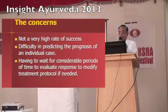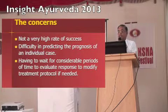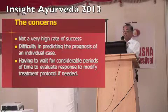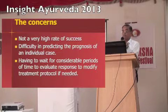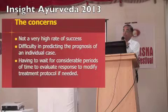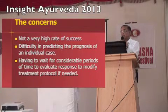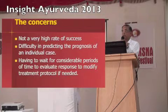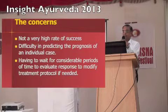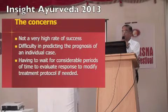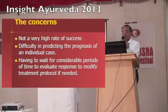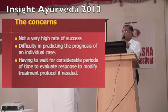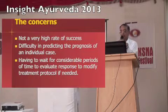This approach has a particular problem in that there is difficulty in predicting the prognosis of an individual case. We also have to wait a considerable period of time to evaluate the response in order to modify the treatment protocol. For menstrual irregularity, we wait several cycles before deciding the direction. For infertility, we tend to wait seven to eight months, and if nothing happens, we have to redesign our strategy — which is a problem for both doctor and patient.